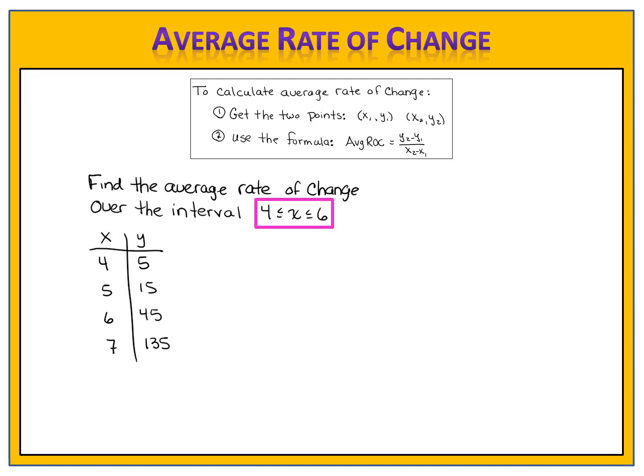Let's compare answers. We know that the interval, 4 to 6, is the key to finding the two points we need. Those two numbers, 4 and 6, are the x values, so we write them in the x position of the ordered pairs. We look in the table to find the corresponding y values. When x is 4, y is 5, so our first point is (4, 5). When x is 6, y is 45, so we write 45 in the second ordered pair: (6, 45).